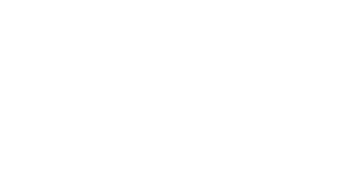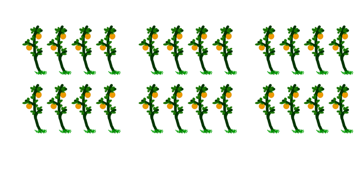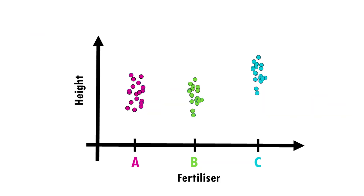Let's imagine you've just invented three new super fertilizers — A, B, and C — and you want to know which one makes plants grow the tallest. Each group of plants gets a different fertilizer, and after four weeks you measure their height. Now it's time to check if the difference in plant height between groups is real, if it's statistically significant — in other words, if one of the fertilizers actually works better than the others.